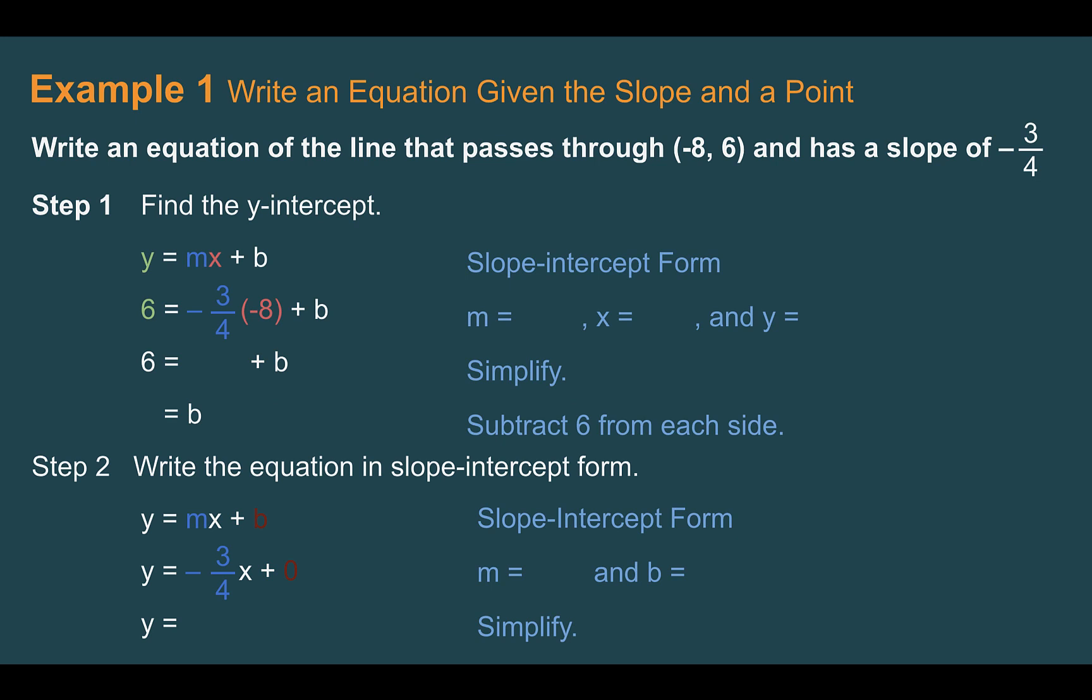Example 1: Write an equation given the slope and a point. Write an equation of the line that passes through negative 8, 6, and has a slope of negative 3/4. So the first thing we want to ask ourselves is this coordinate the y-intercept? The y-intercept is going to have a coordinate of 0, and then whatever that second number is, b. That's not what this is. The x value is not 0. It's not the y-intercept. So we can't just use it.